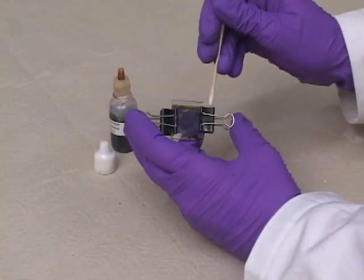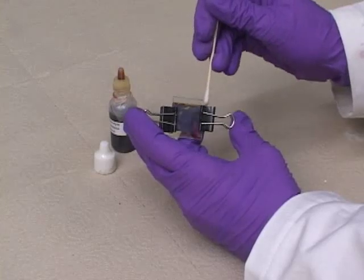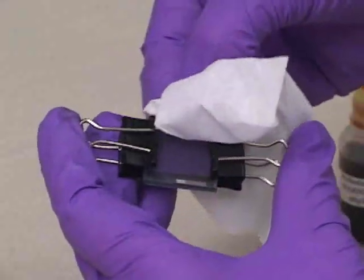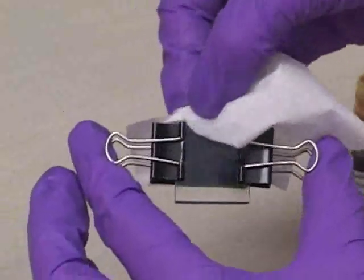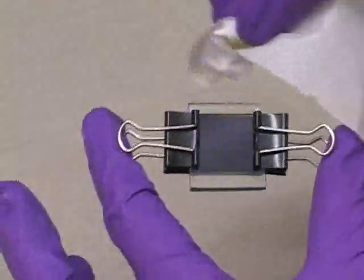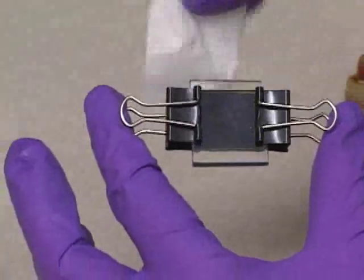Step 7. Wipe off the excess electrolyte solution from the exposed areas of the glass using cotton swabs and tissues dampened with ethanol. The cell will not work well if there is any electrolyte solution left on the exposed areas where the alligator clips attach.